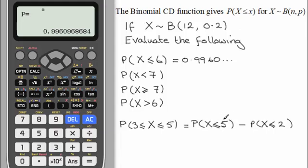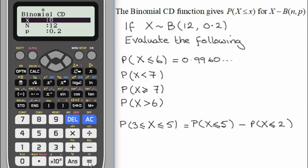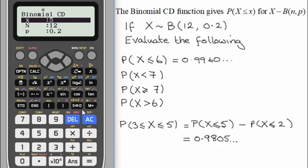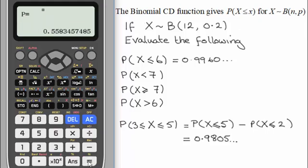To work out P(X ≤ 5), I press equals to go back and change the observed value to 5, press equals again, and we get 0.9805. Then press equals again to go back, change the observed value to 2, press equals again, and we get P(X ≤ 2) = 0.5583. Subtracting 0.5583 from 0.9805 gives our answer of 0.4222.